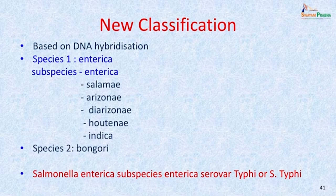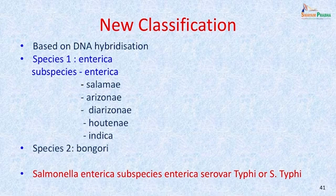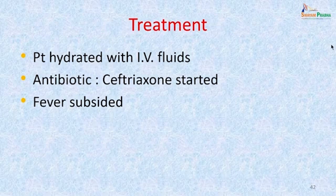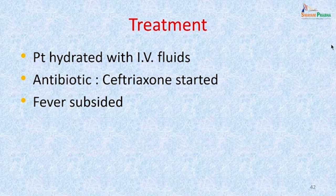If culture had been negative, a PCR or nucleic acid detection test could have been done directly on blood, stool, or urine. Conventional or real-time PCR can detect as few as 10 circulating organisms in the blood — very useful when blood cultures are negative in the presence of fever. As blood culture was positive here, PCR was not pursued. The patient was hydrated with IV fluids, ceftriaxone was started intravenously, fever subsided, and the patient responded to treatment. Ciprofloxacin is usually the first-choice outpatient drug but this isolate was resistant.